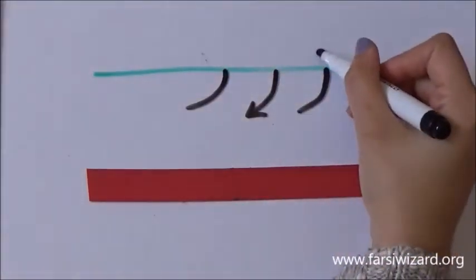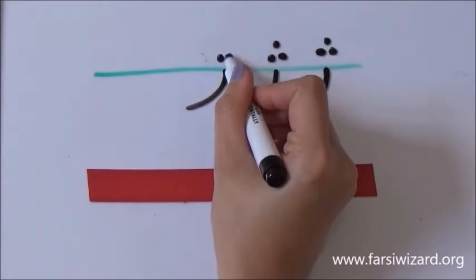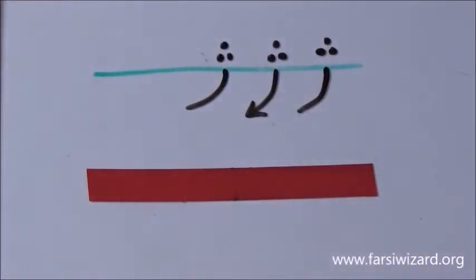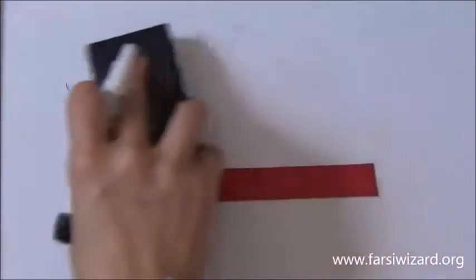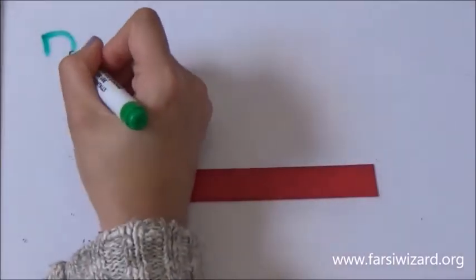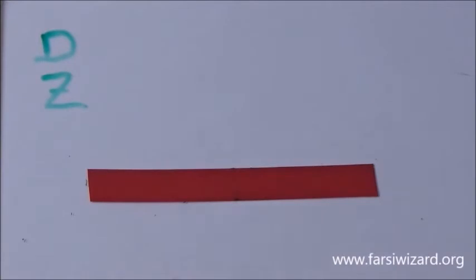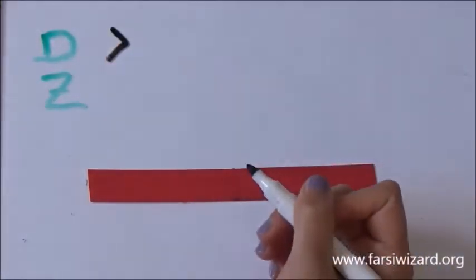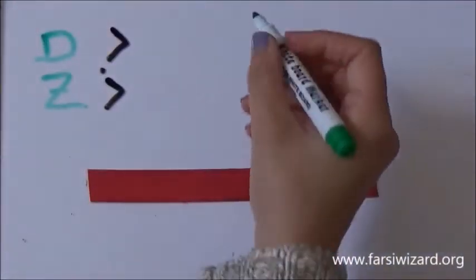Now if you put three dots you will get ZH. It doesn't have an equivalent in English but we use it in Farsi. ZH. Okay now. So we have D, Z. These are the Persian letters equivalents for these letters in English. DAL and ZAL.